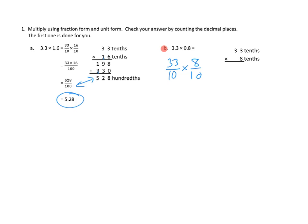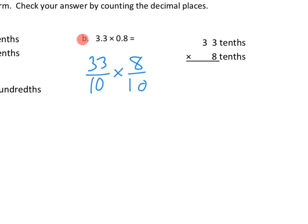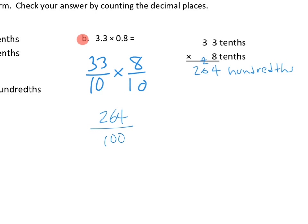I'm going to zoom in a little bit because my handwriting is not so fantastic. 8 ones times 3 ones is 24 ones. Then 8 ones times 3 tenths is 24 tenths, plus 2 more tenths is 26 tenths. So that's 264. What is our unit? Tenths times tenths is hundredths. So I'm going to write that: hundredths. Over here, we can do the same thing — 33 times 8 is 264, and 10 times 10 is 100. So 264 hundredths — same thing.